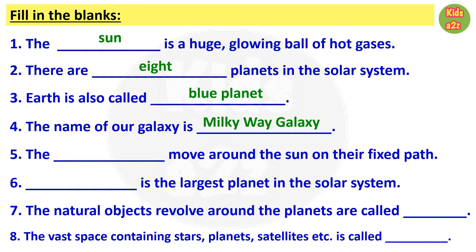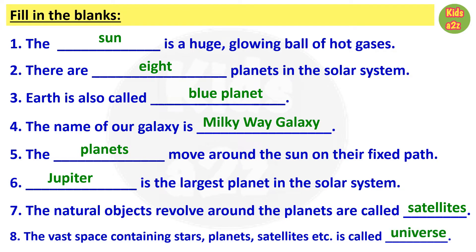Number five: the dash move around the Sun on their fixed path. Answer is planets. Number six: dash is the largest planet in the solar system. Answer is Jupiter. Number seven: the natural objects that revolve around the planets are called dash. Answer is satellites. Number eight: the vast space containing stars, planets, satellites, etc. is called dash. Answer is universe.